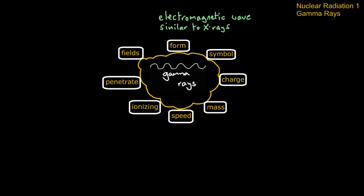But don't forget electromagnetic waves all have the same sort of properties as the visible light we can see. The symbol is a gamma and they have zero charge. It's an electromagnetic wave.